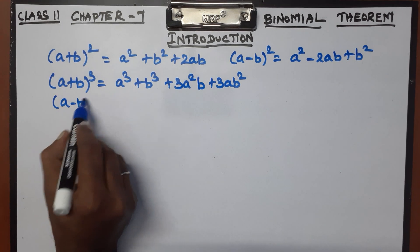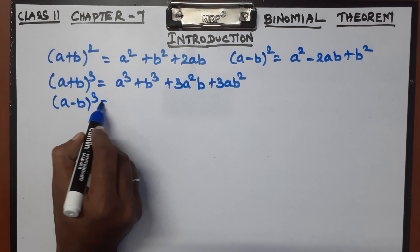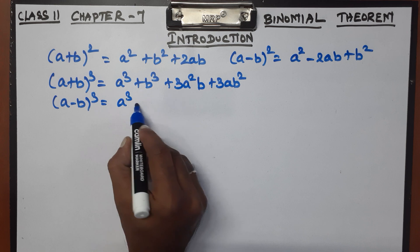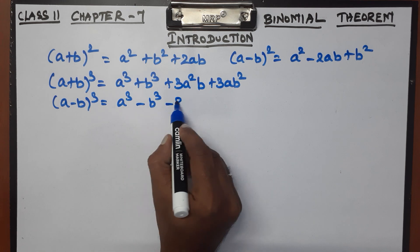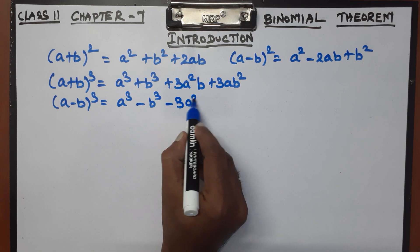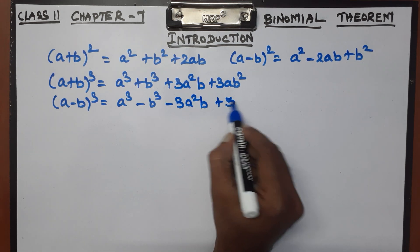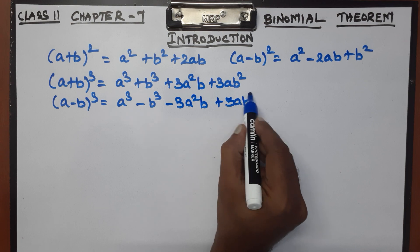Now (a minus b) whole cube. That gives us: a cubed minus b cubed minus 3a squared b plus 3ab squared.